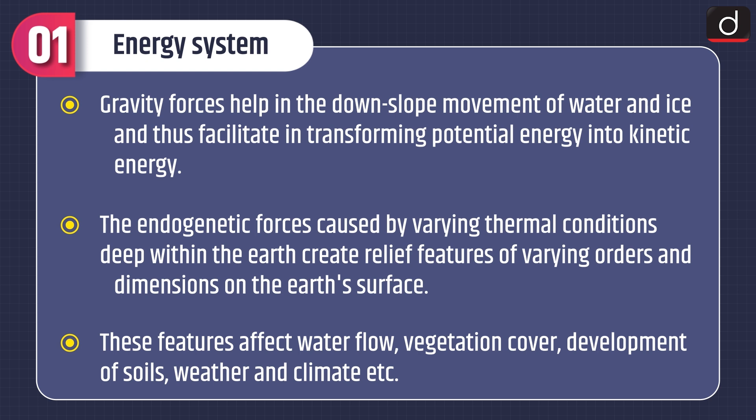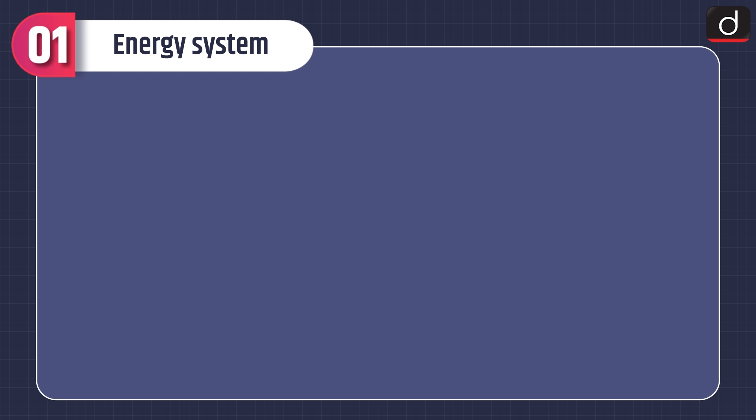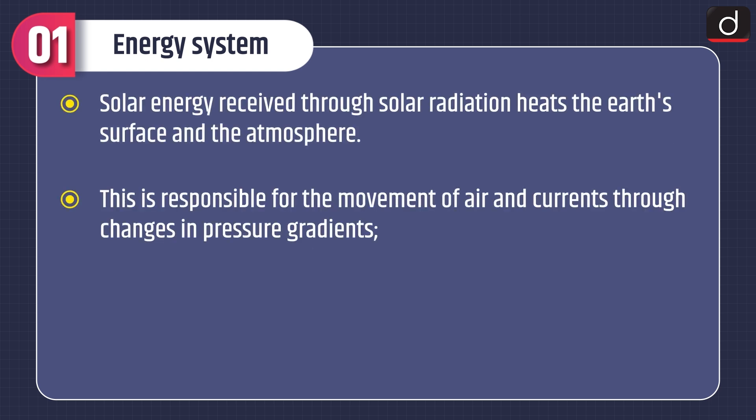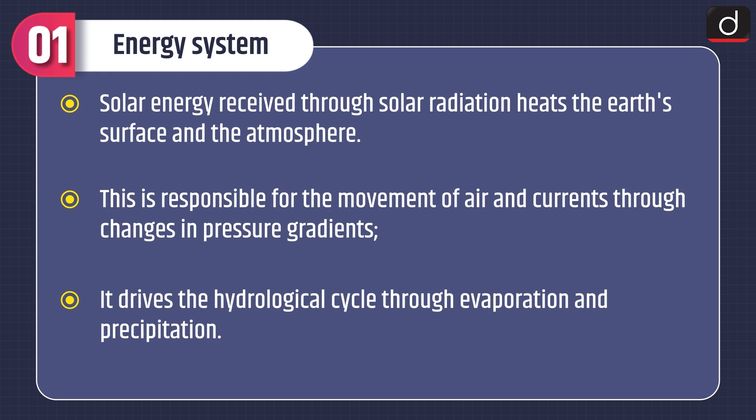Solar energy received through solar radiation heats the earth's surface and the atmosphere. This is responsible for the movement of air and currents through changes in pressure gradients, and it drives the hydrological cycle through evaporation and precipitation.